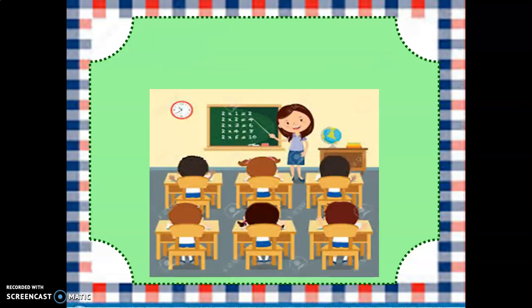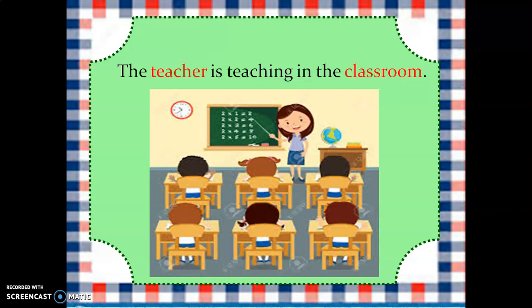Similarly, let's look at one more picture. There is a classroom and in this classroom a teacher is teaching maths to the students. We will frame a sentence like: 'The teacher is teaching in the classroom.' The nouns are teacher and classroom. Teacher is a person and classroom is a place, so both of them are nouns.